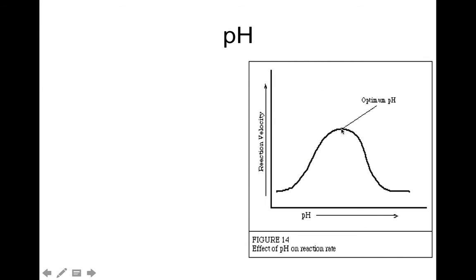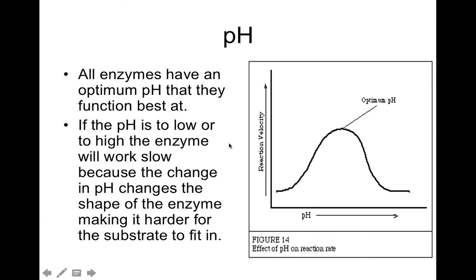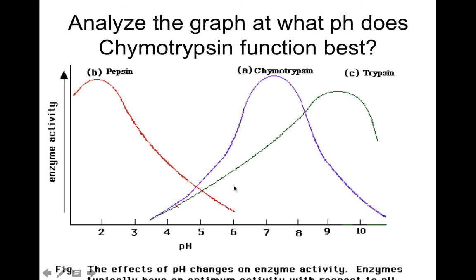Here's a graph showing optimum pH for an enzyme. This axis shows reaction velocity — how fast it's happening. The enzyme reacts fastest at the optimum pH. If the pH is too low or too high, it goes slower. There are lots of these graphs on the test. For example, chymotrypsin's optimum pH is right about 7.2 — that's the highest point on the graph for chymotrypsin.